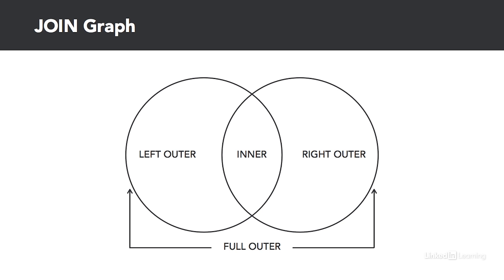A left outer join will return all the records from the left table in the join clause, regardless of matching records in the right table. Fields from the right table with no match will display null values. A right outer join will return all the records in the right table regardless of matching records in the left table — fields from the left table with no match will display null values. A full outer join will return all the rows in both tables; when rows don't have a match, the field will display a null value.